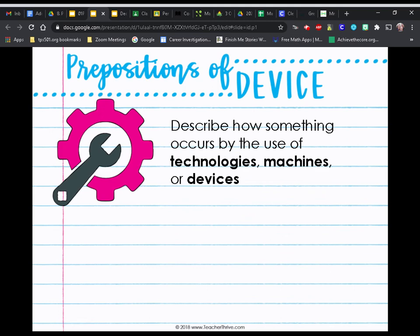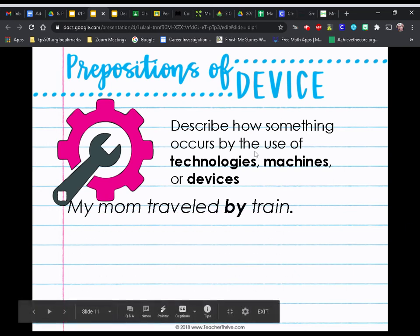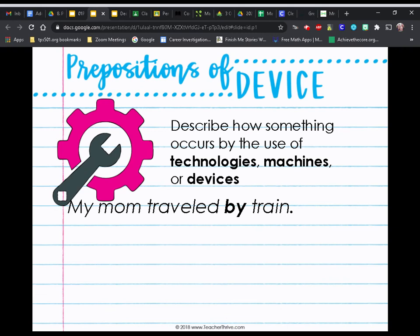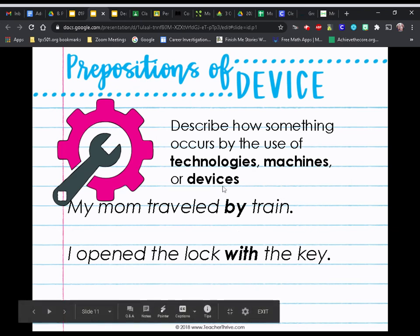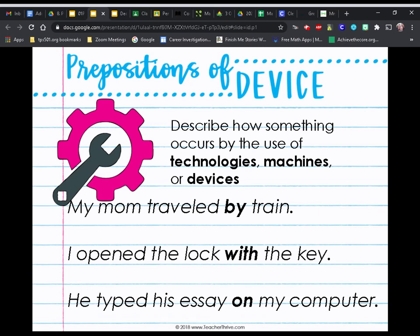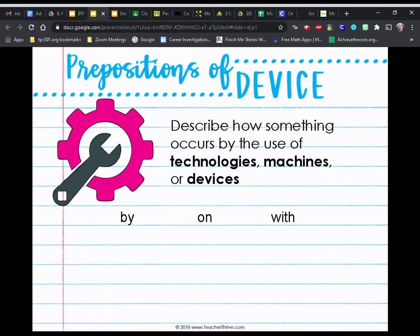Prepositions of device describe how something occurs by the use of technologies, machines, or devices. For example: my mom traveled by train — 'by' tells me what technology she used to travel. I opened the lock with the key — 'with' tells me what device we used. He typed his essay on my computer — 'on' tells me what device or technology was used. By, on, and with are the three prepositions commonly used for this.